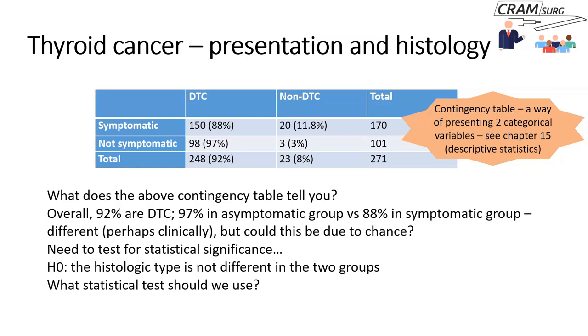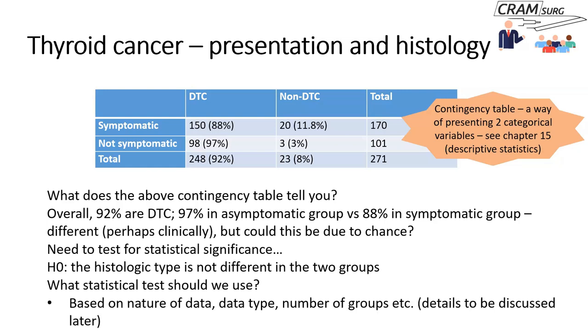Deciding which test to use depends on the nature and type of the data — whether it's categorical or quantitative, whether it's normally distributed, and the number of groups. In this particular setting, you use the chi-square test, which is a non-parametric test that looks at the association between two categorical variables.